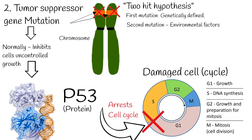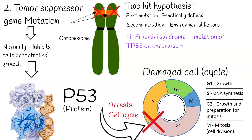An example of tumor suppressor gene mutation is Li-Fraumeni syndrome, in which a germline mutation of TP53 on chromosome 17 is associated with a high rate of many types of tumors.